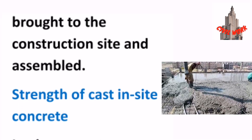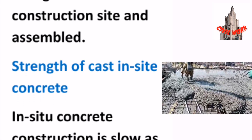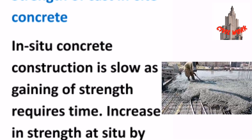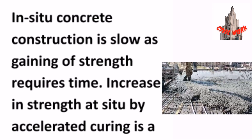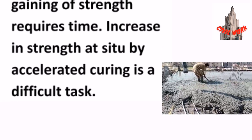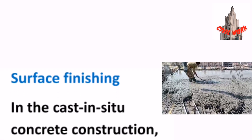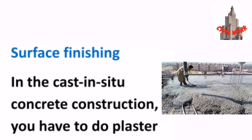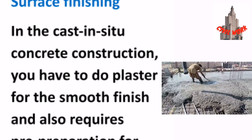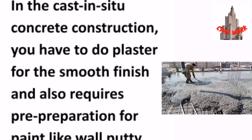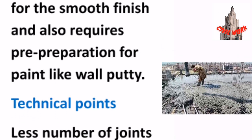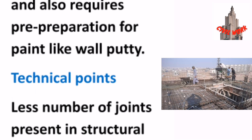Strength of cast-in-situ concrete: Cast-in-situ concrete construction is slow as gaining of strength requires time. Increase in strength by accelerated curing is a difficult task. Surface finishing: In cast-in-situ concrete construction, you have to do plastering for a smooth finish, and it also requires pre-preparation for paint, like wall putty.